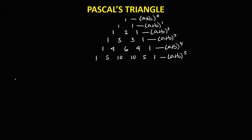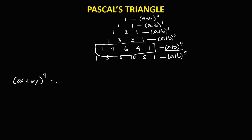So if we have this given: (2x + 3y) to the power 4. Since the exponent is 4, we're going to use (a + b) to the power 4, and these are the numerical coefficients for every term: 1, 4, 6, 4, and 1. For the first term, the exponent is decreasing or going down: 2x to the power 4, then 2x to the power 3, then 2x to the power 2, and 2x to the power 1.